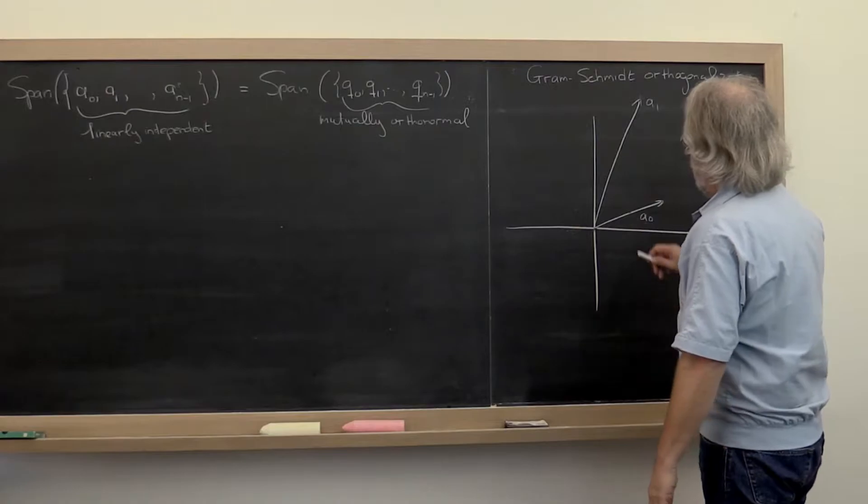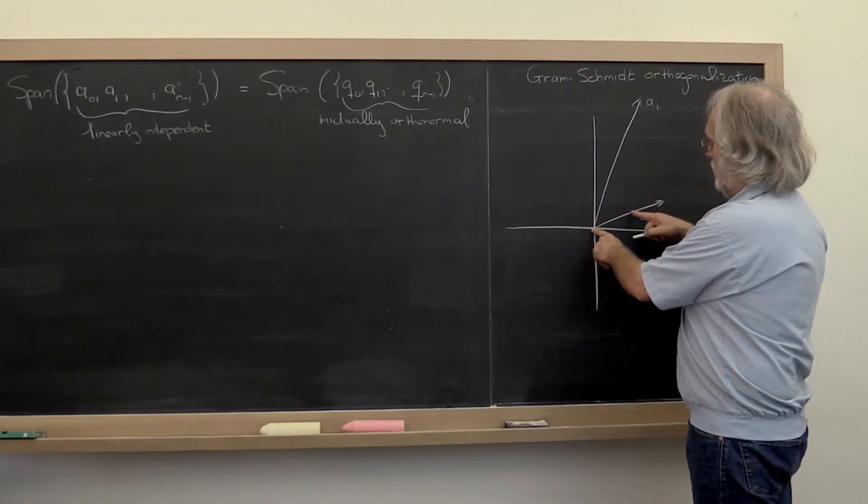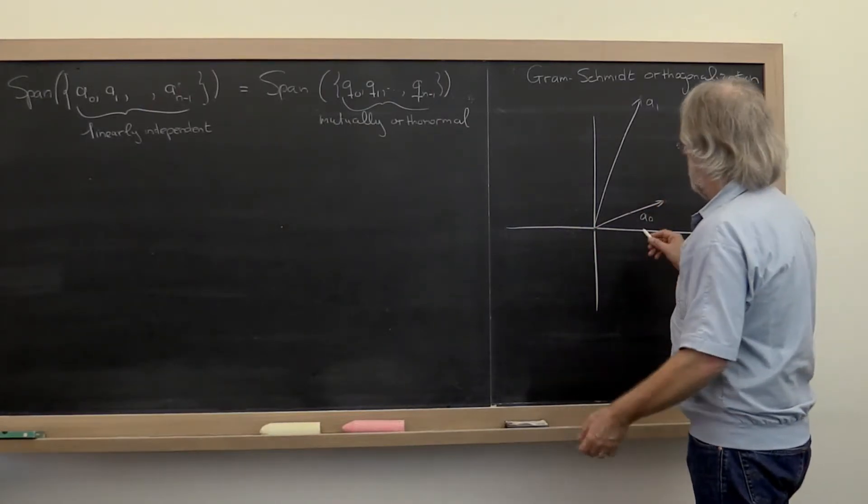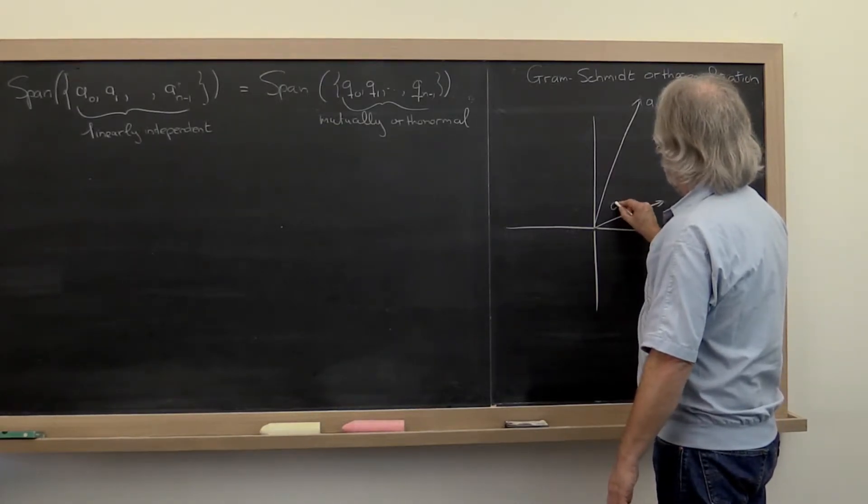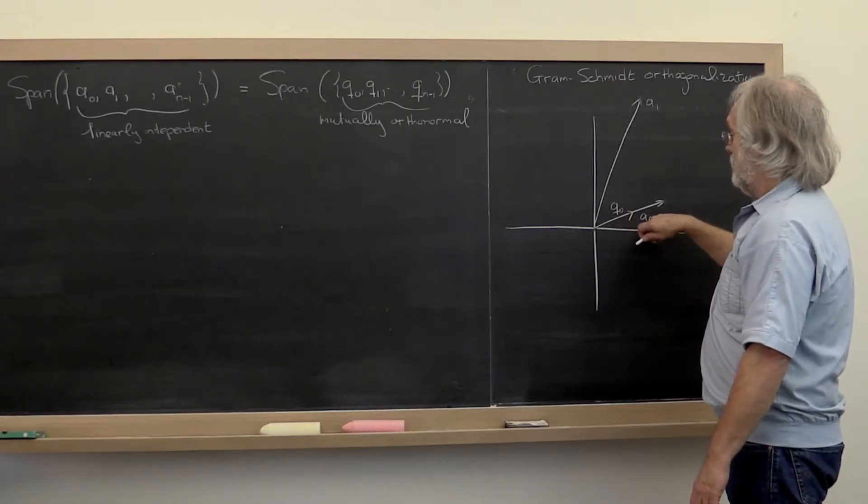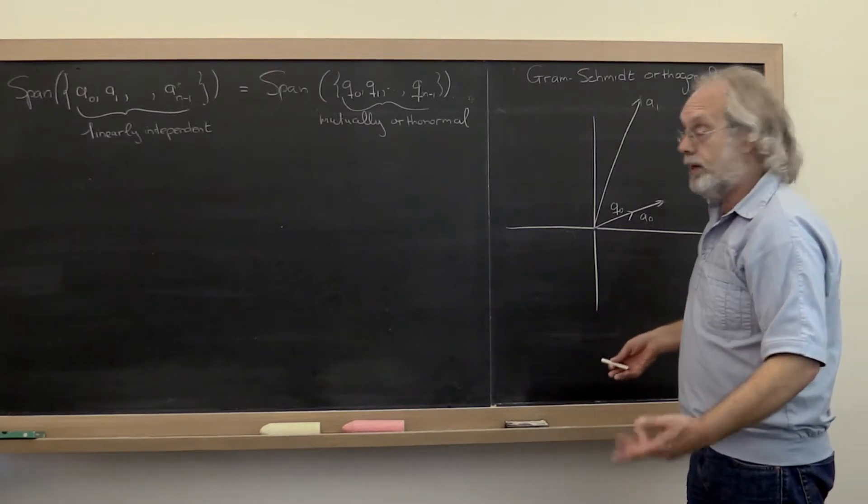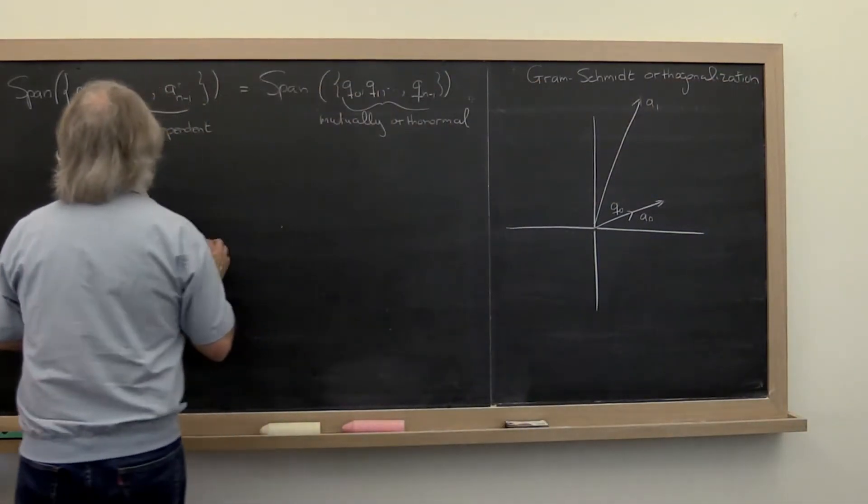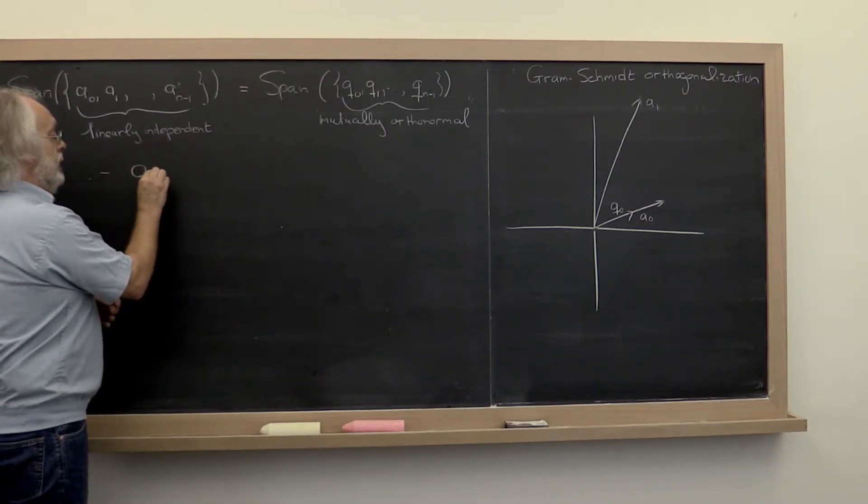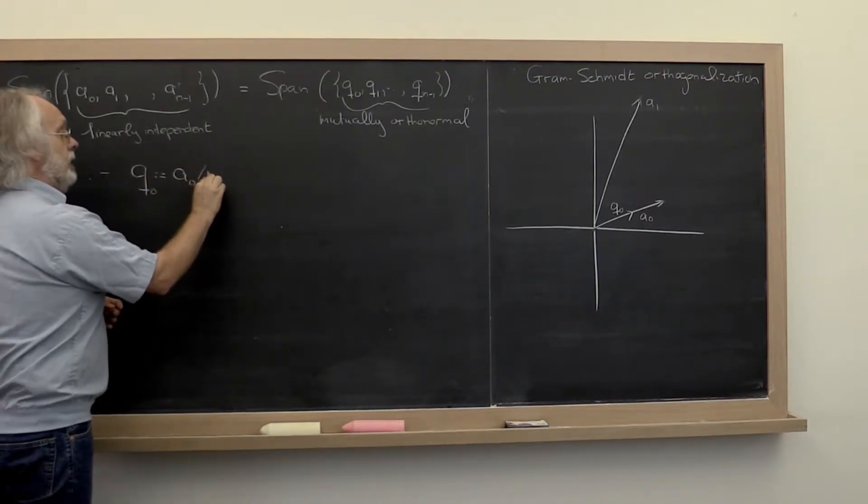Now, how can we create a vector of length 1 in the direction of a0? That's pretty easy. We can make that the vector q0. And q0 is just a0 divided by its length. So our process could be, in the first step, you set q0 equal to a0 divided by its two-norm.